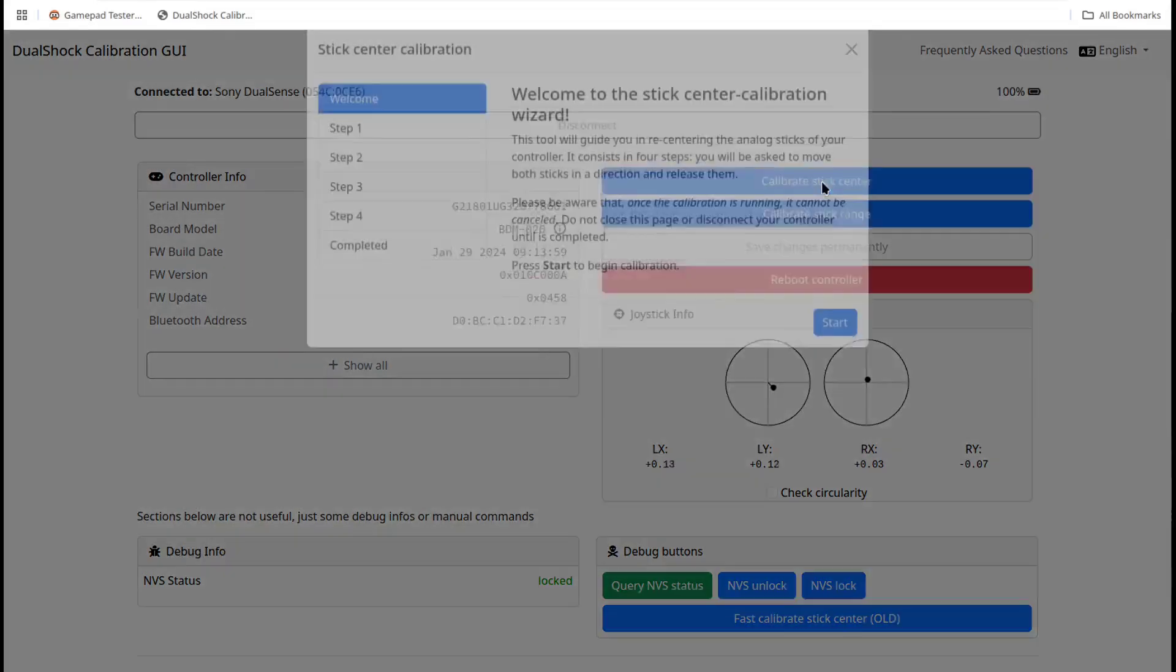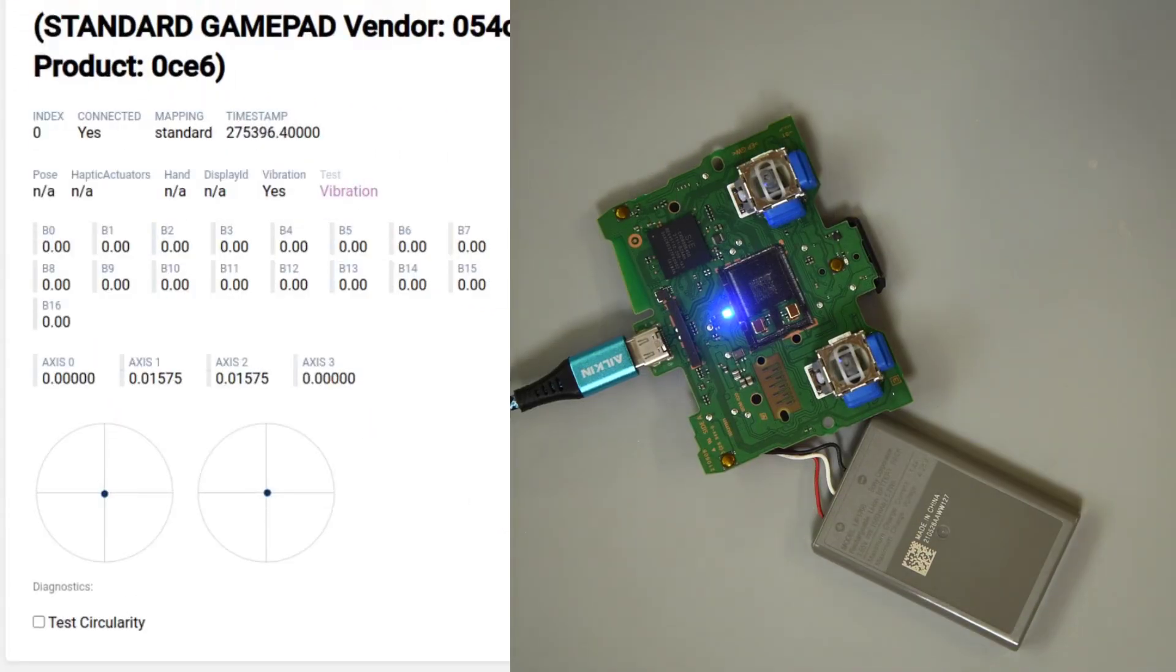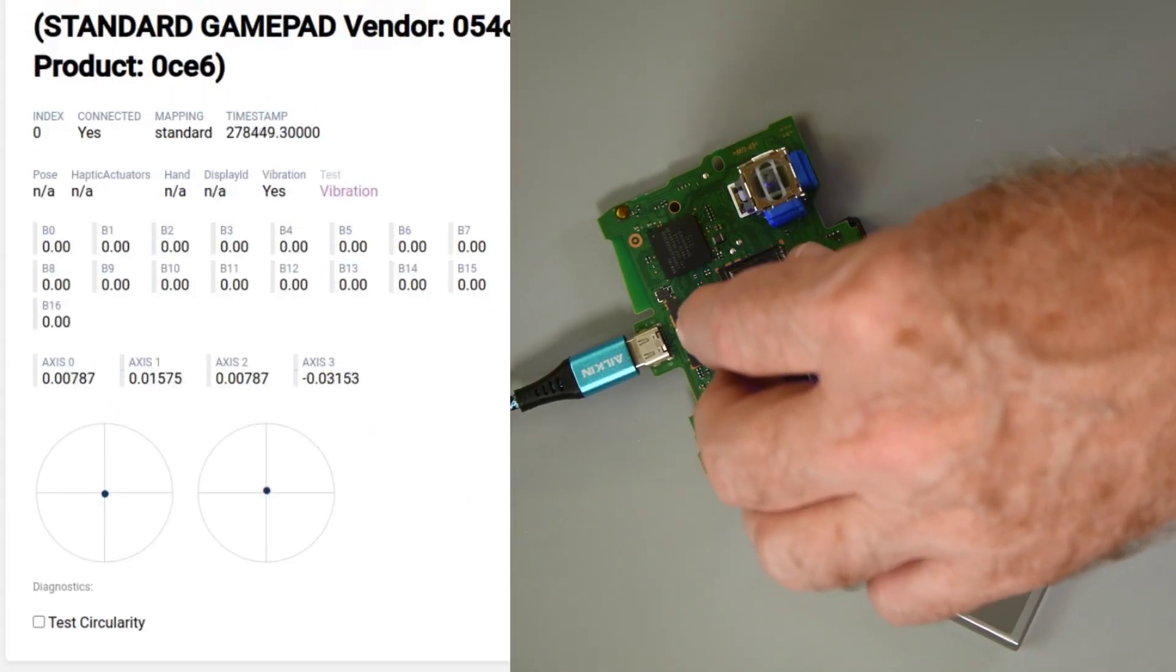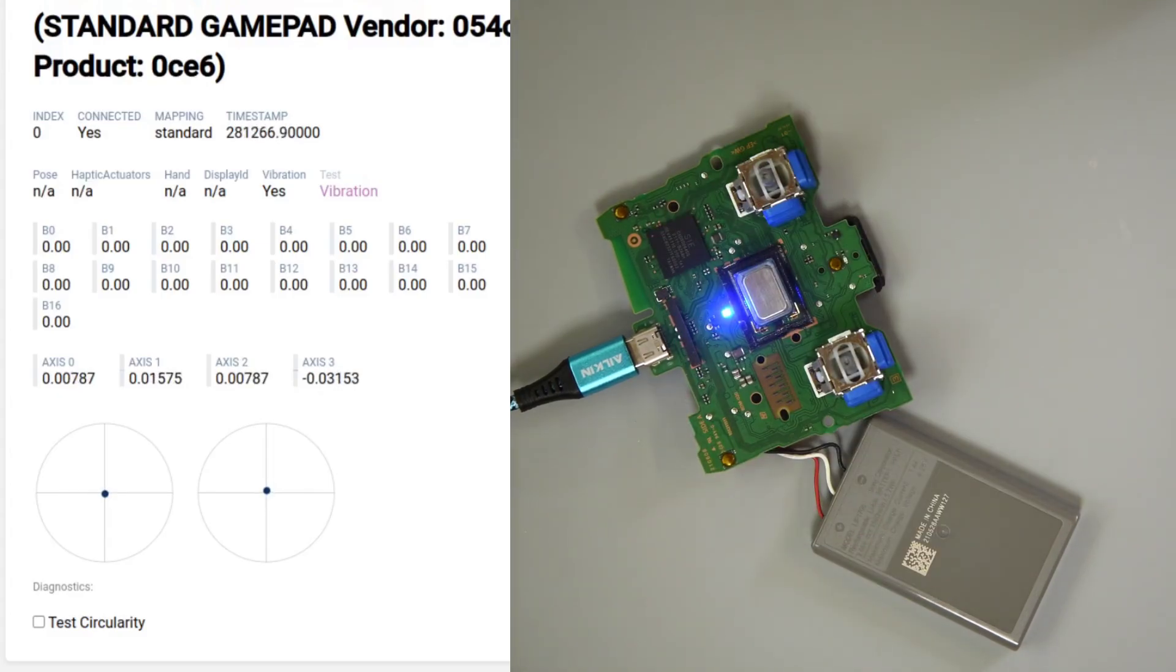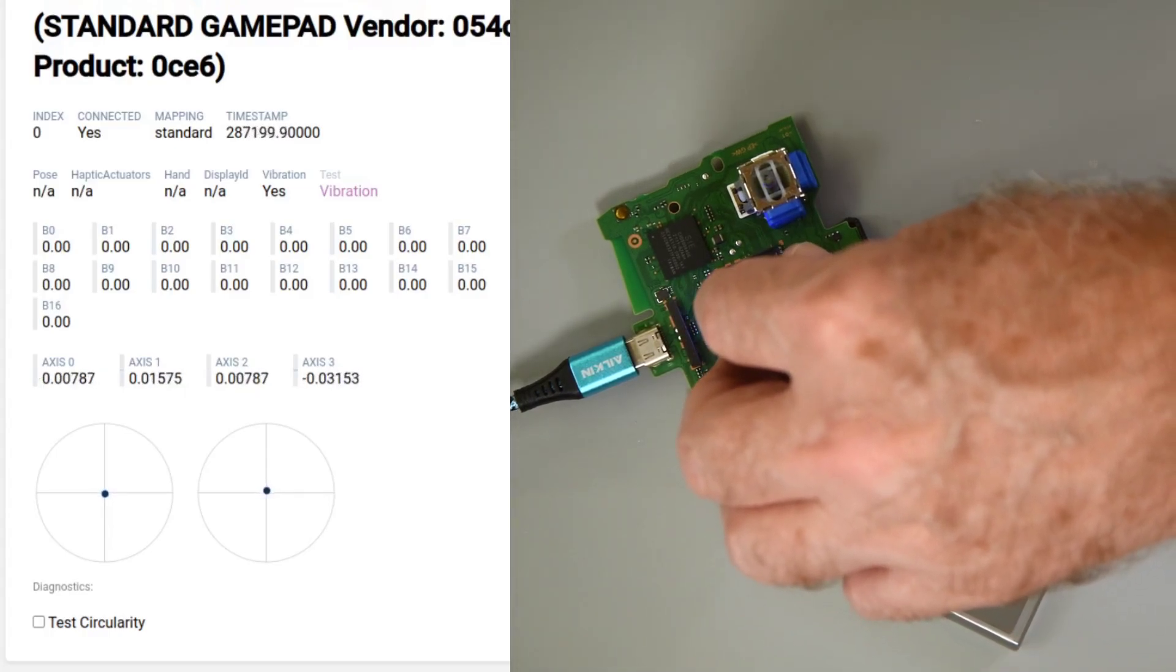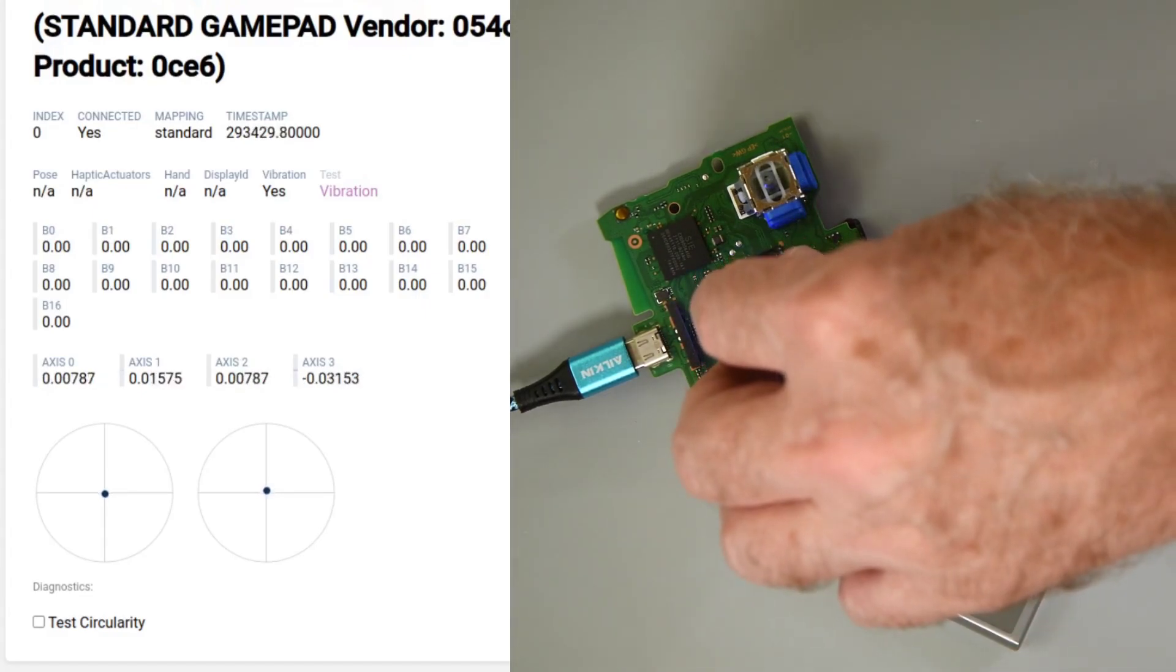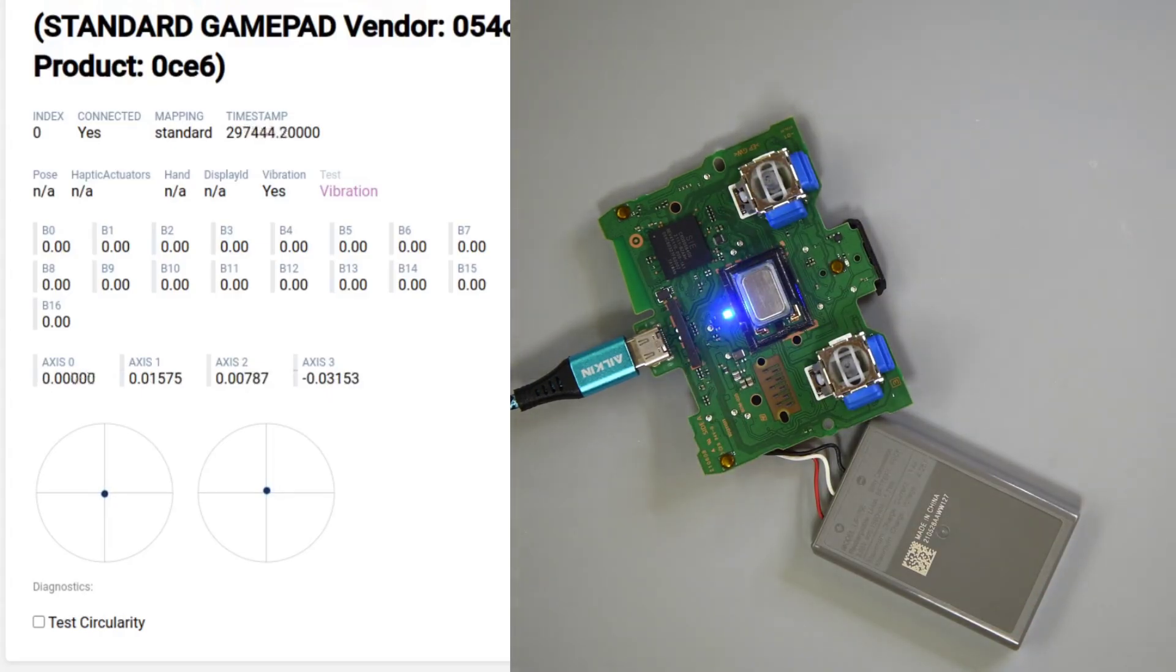But here I'm going to do a bit extra. I want to see how much effect the speaker has on the right joysticks up and down axis, considering how sensitive this TMR sensor was in testing. So I'll go to the calibration website and do a stick center calibration. Then without the speaker in place, I'll see if I can move the right joystick so that the up-down axis reads zero. Then I will put the speaker in place. Really, not much effect. Not much at all. I was expecting it to move the axis more than that. I think the direction that the TMR sensor is sensitive to the magnetic field helps it ignore most of the magnetic field from the speaker.